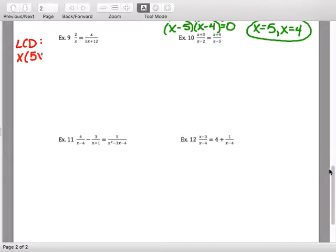If you're having trouble getting started, let me just make sure you're on the right path. The LCD is X times 5X plus 12. So to find the restrictions, you set each of those equal to 0. So X can't be 0. And if I do this one, X can't be negative 12 fifths.